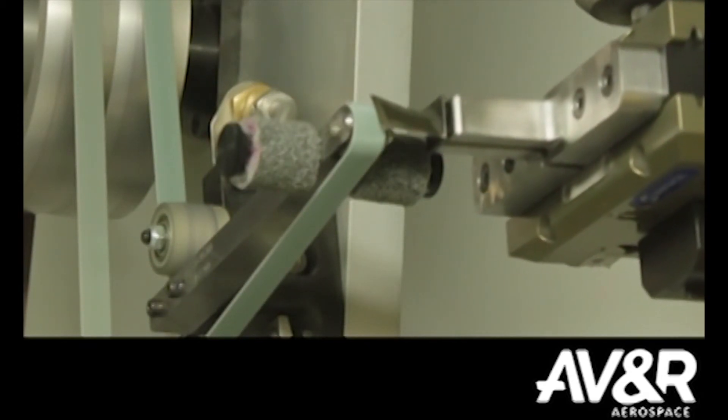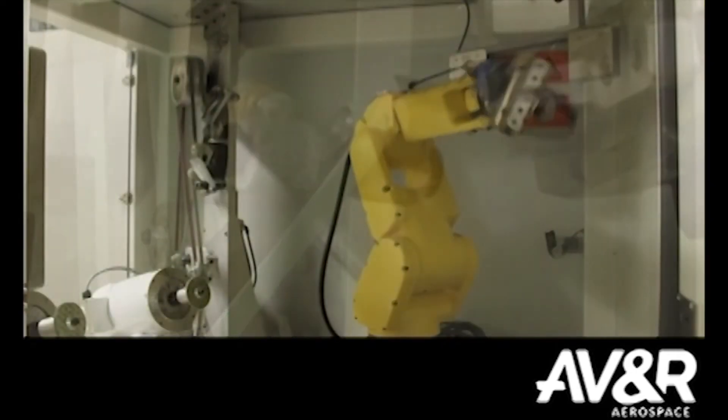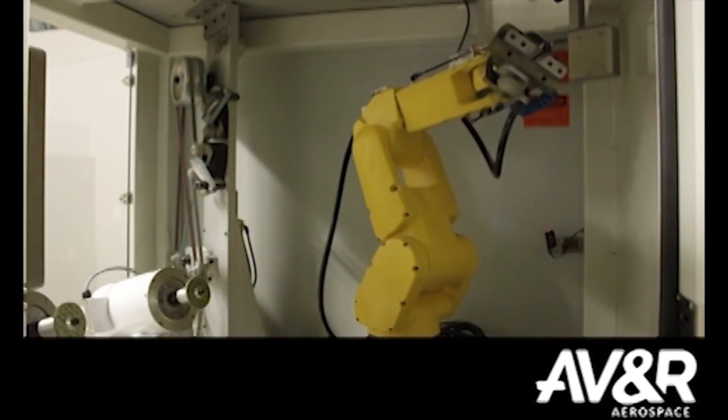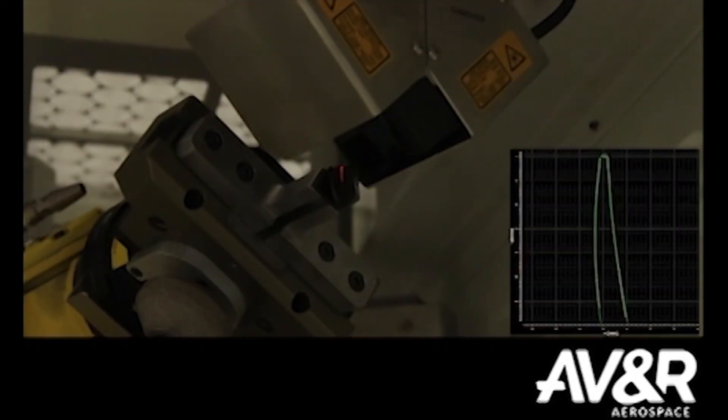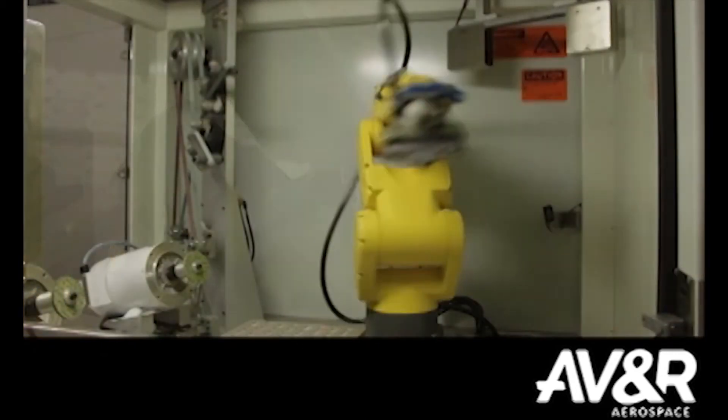The system uses FANUC America's versatile and compact LR-Mate 200ID robot and the FANUC FS-15IA force sensor to profile blades. The force sensor is able to detect the force applied on the part when the blending on the belt sander is completed.